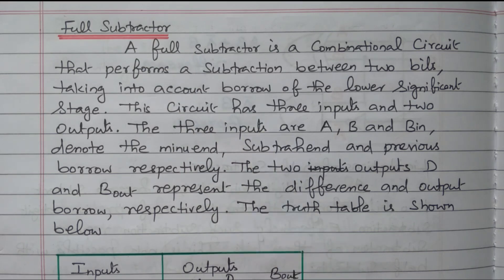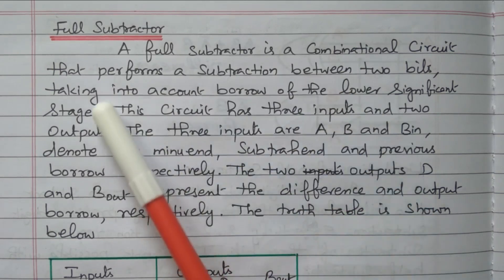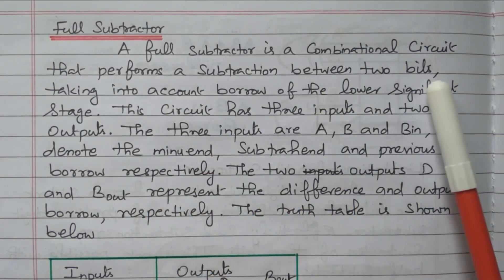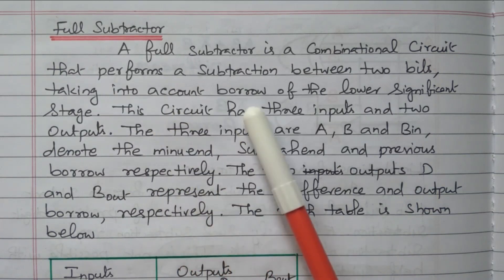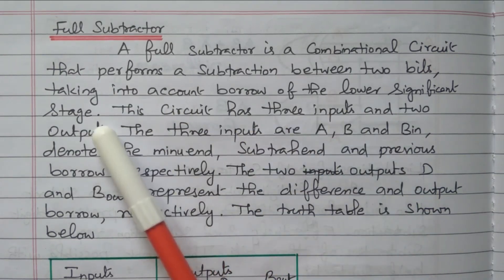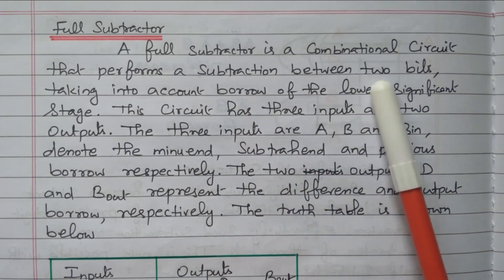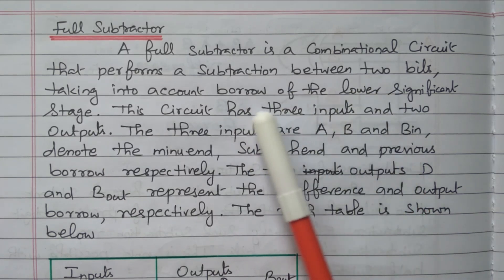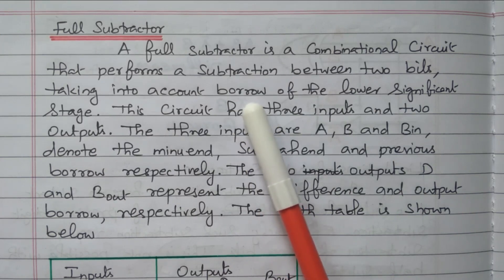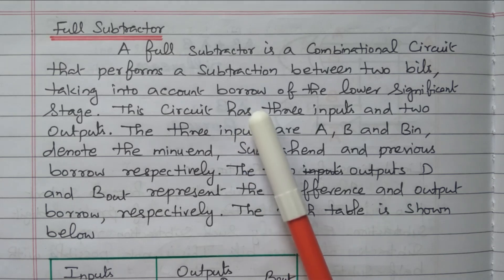The full subtractor is a combinational circuit that performs the subtraction between two bits, taking into account the borrow of the lower significance stage. This full subtractor will subtract two-bit binary data, and the borrow is taken into account while subtracting.